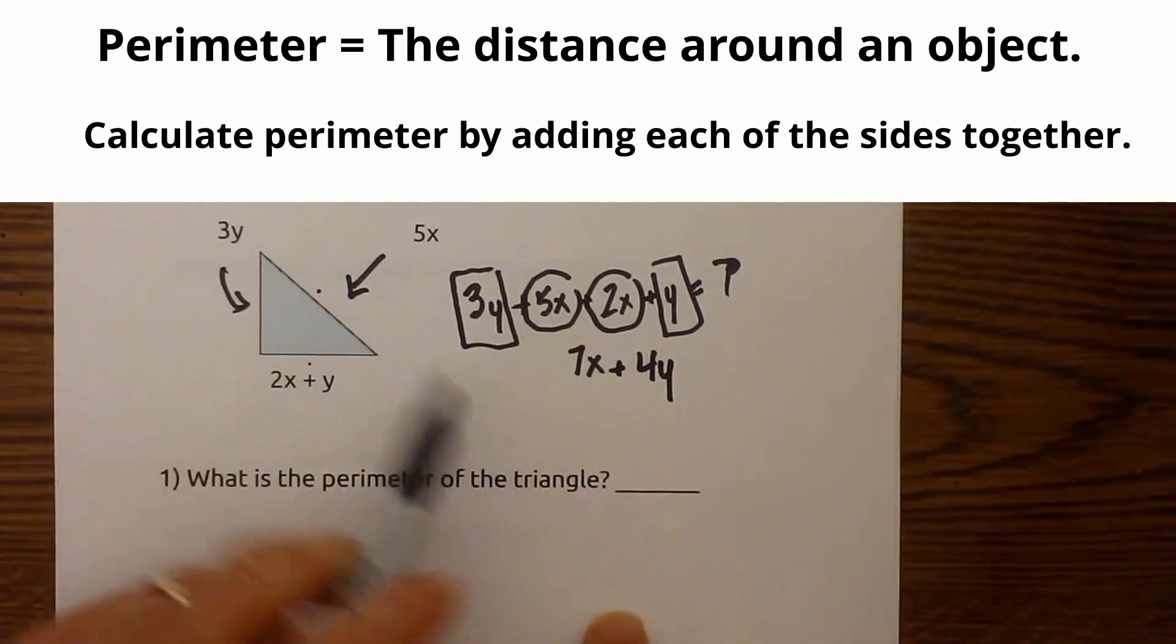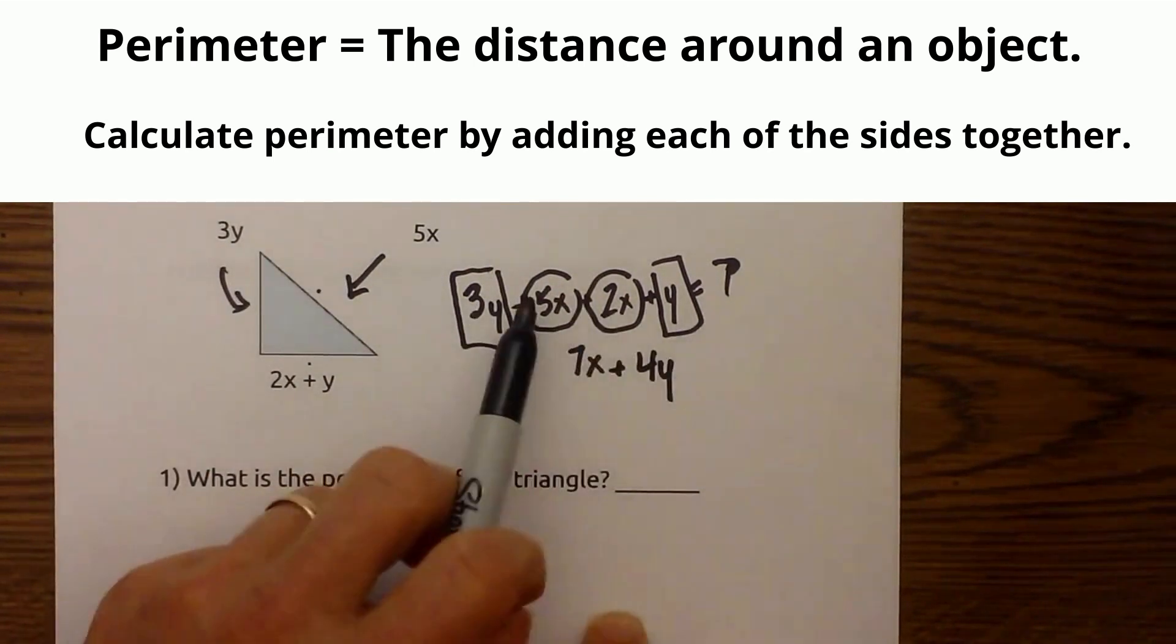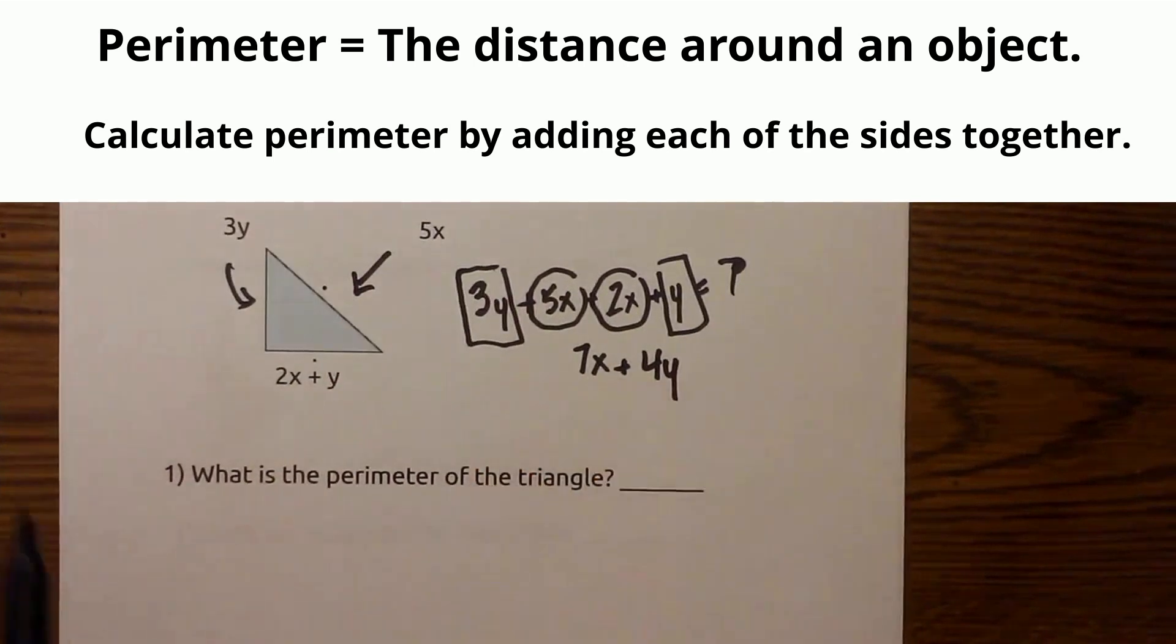So the perimeter would be, again I added the three sides, I added the like terms and there it is.